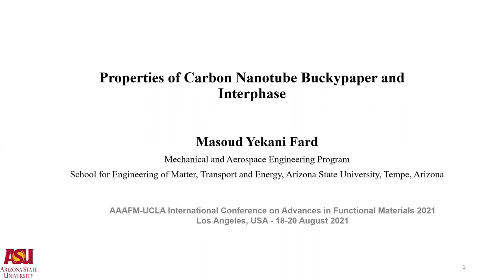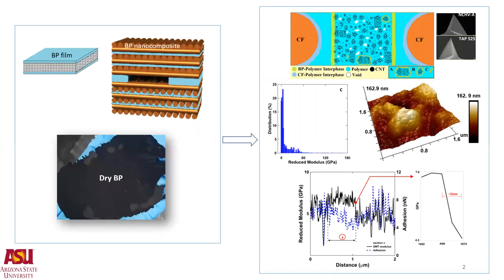My talk today is about properties of carbon nanotube Bucky paper interface. I'm going to discuss the fabrication procedure for the Bucky paper membrane and two-phase and three-phase nanocomposites. Then we will talk about the main goal of this talk, which is about the interface around the CNT network and the interface within the Bucky paper as one constituent and the surrounding polymer. The technique we use is an atomic force microscopy-based quantitative dynamic mapping technique. We looked at the heterogeneity and homogeneity of the Bucky paper at different length scales, and at the end we look at the interface thickness of the Bucky paper.